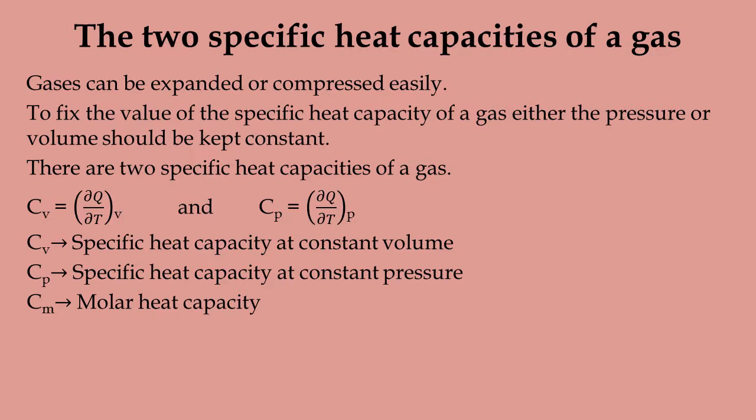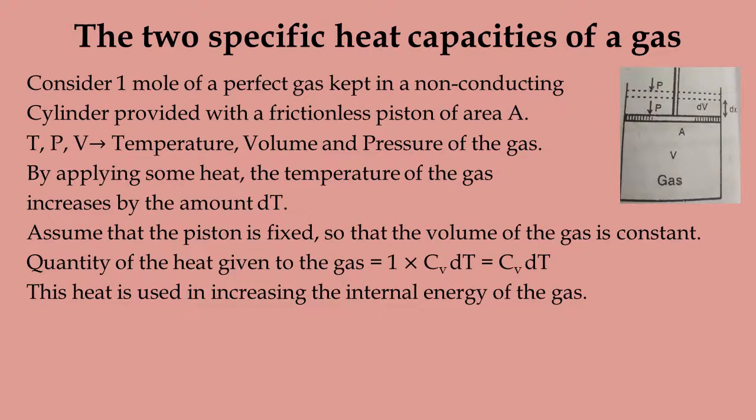Next, we discuss the two specific heat capacities of a gas. Since gases can be expanded or compressed easily, to fix the specific heat capacity, either the pressure or volume must be kept constant. There are two types: Cv, the specific heat capacity at constant volume, and Cp, the specific heat capacity at constant pressure.